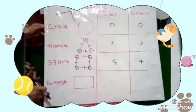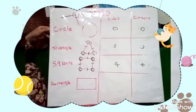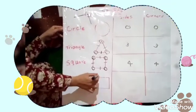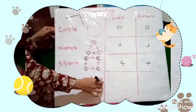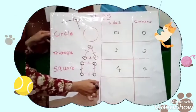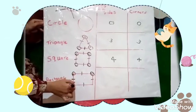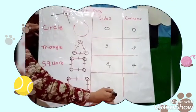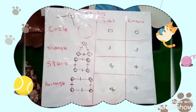The last one. What's this? Rectangle. How many sides? One, two, three, four. How many corners? Four. One, two, three, four. Four sides, four corners.